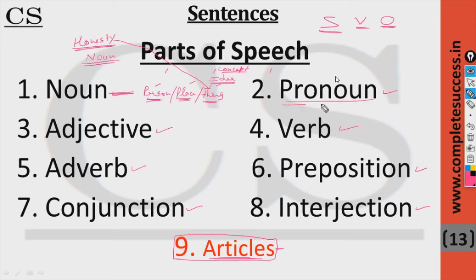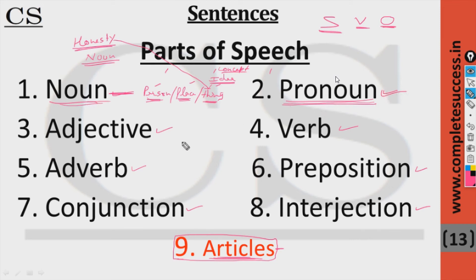What is a pronoun? A pronoun is a word which is used in place of a noun. To refer to a noun again and again in a sentence, instead of repeating the noun, we use a pronoun. What is an adjective? In simple terms, an adjective refers to quality, but it can also indicate quantity or number — anything which qualifies a noun is an adjective.